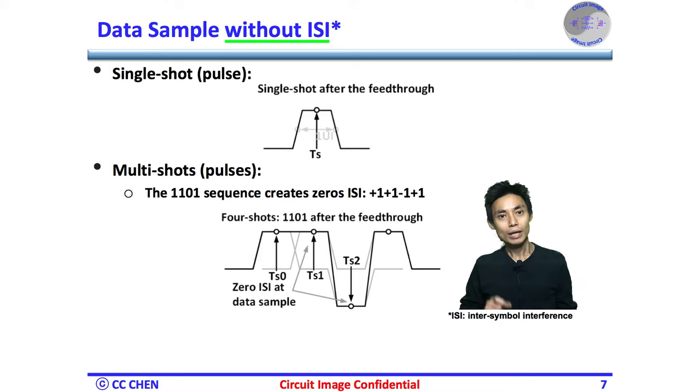The single shot is feeding through a lossless channel and sampled at time Ts without any ISI. Then, the multi-shot response is simply the linear combination of lossless single-shot pulses in time shift and amplitude scaling to the bitstream. For the multi-pulse 1101 bitstream, there is no ISI at the data sample Ts0, Ts1, Ts2, and so on.